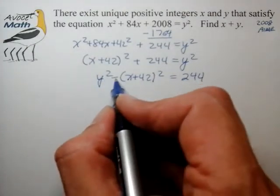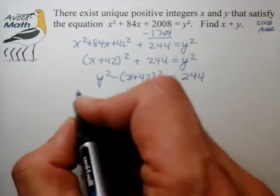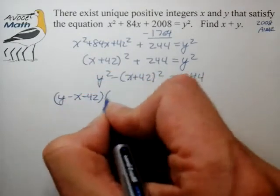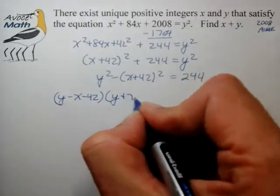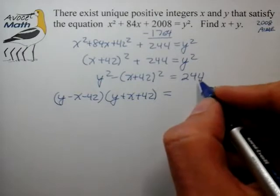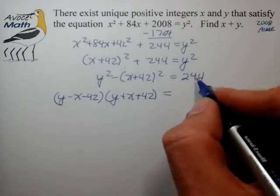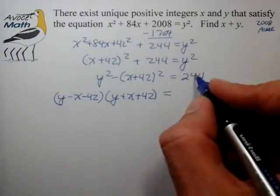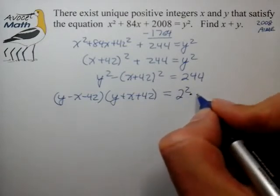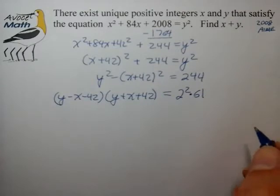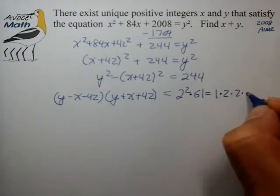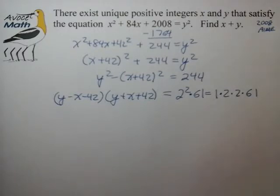So we have y - (x + 42), so that's (y - x - 42)(y + x + 42) = 244, which we now write in prime factorization form. So you can pull out a factor of 2, another factor of 2, and you're left with 2² × 61. And let me just write that as a kind of a string of 2 × 2 × 61. And at this point, let's go ahead and examine these factors on the left.